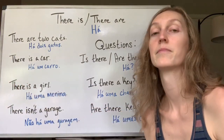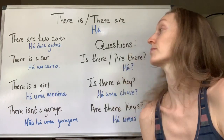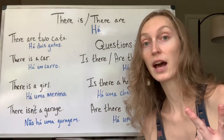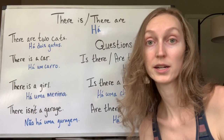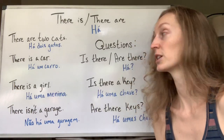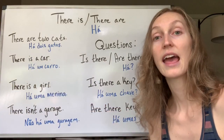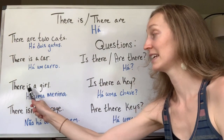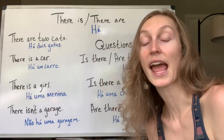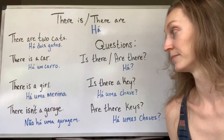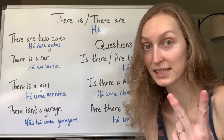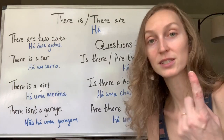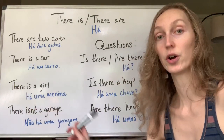There is a car — há um carro. Se eu tivesse dois carros, seria there are two cars. Porque quando você vê there is, você tem que usar 'a car' no singular. There is a girl — há uma menina. E se tivesse duas meninas, como seria em inglês? There are two girls. Mas porque só tem uma menina: there is a girl.